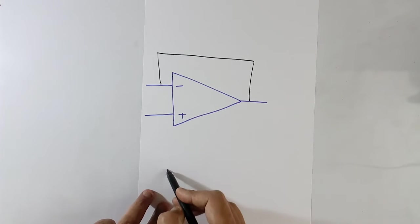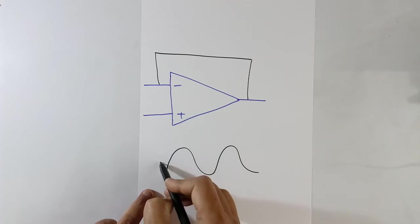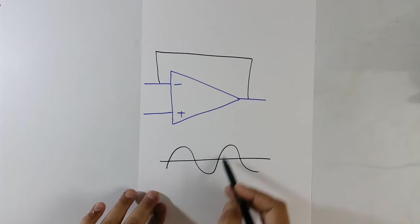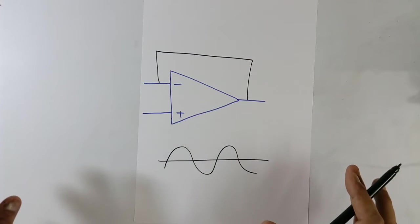When you are giving a sine wave as an input, the output also should come like a sine wave. Then it is linear range.